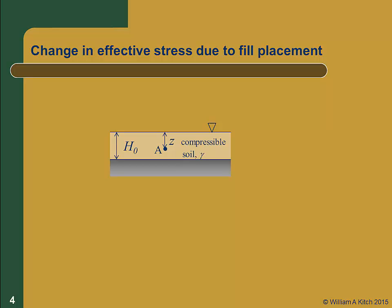Let's look at how fill placement can change effective stress. We'll start out with a compressible layer of soil with a thickness h0 and a unit weight of gamma. The water table is at the ground surface. If we consider a point A at a depth z below the ground surface, the initial vertical stress, sigma prime z zero, will be the total vertical stress, sigma z, minus the pore pressure, u. Or in this case, gamma times z minus gamma water times z.